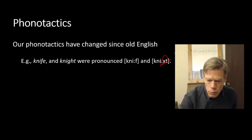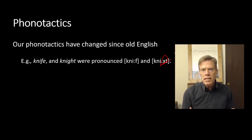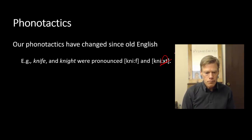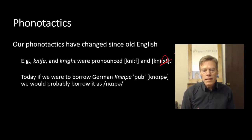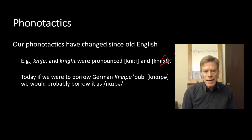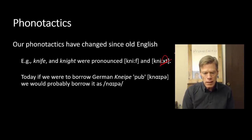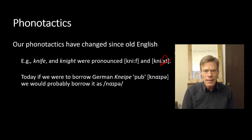We should also notice that English used to have a voiceless velar fricative, which we lost. Today, for example, if we were to borrow the German word Kniepe — and in German the KN sequence is perfectly fine at the beginning of a syllable — but if we were to borrow that word into English, we would probably just lop off the K sound and pronounce it something like nipe.